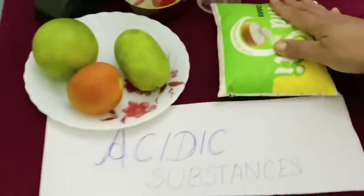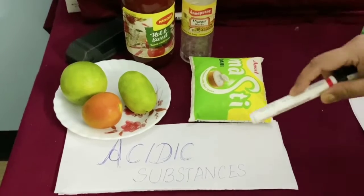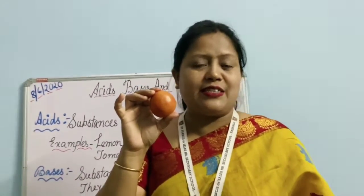So let's look here. I have displayed some examples — very common things which we encounter in our day-to-day life. This is a lemon. How does it taste? It tastes very sour. It contains acid — citric acid. This is tomato. Tomato also contains citric acid. These substances contain citric acid, and that is why these are called citrus fruits.